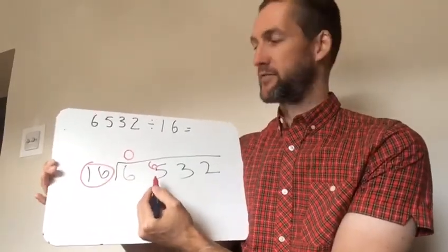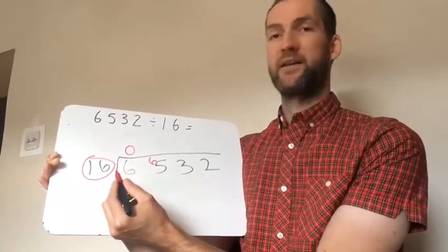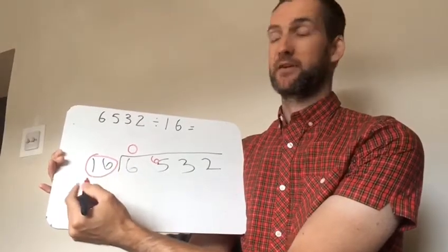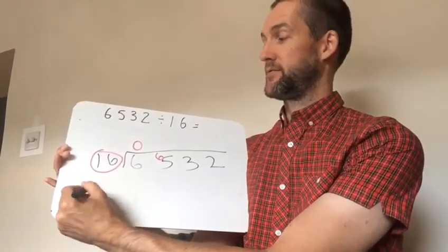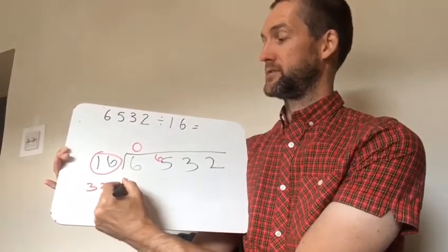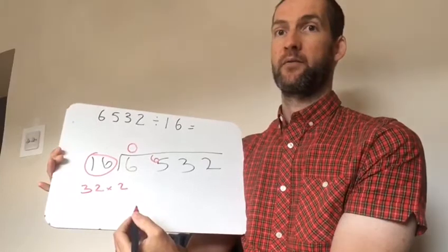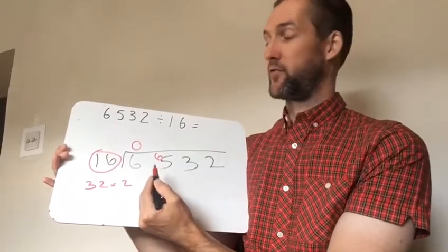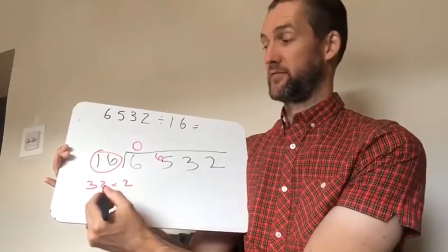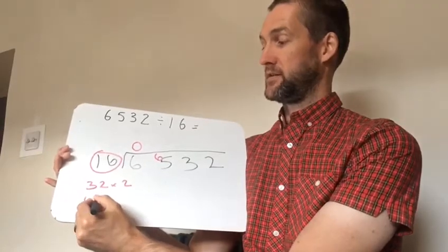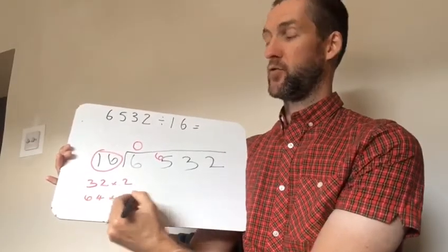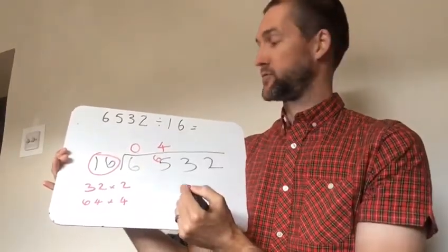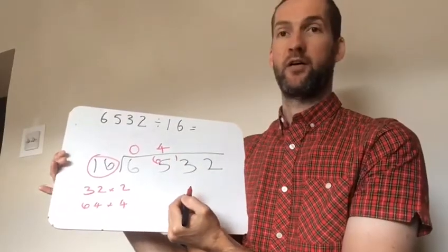How many times does 16 go into 65? Well we may need to do our multiplication facts here. We know that 1 times 16 is 16 so we don't need to write that down. 2 times 16 is 32 so I can write times 2 here. Now if we're thinking mathematically I know if I double 32 I get 64. And that is below 65. So 64 is 4 lots of 16. So that goes in there 4 times. And we carry over the 1.